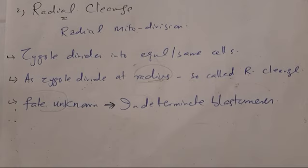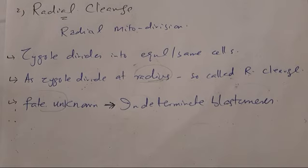This is all about the classification of Eumetazoa — true multicellular animals — on the basis of arrangement of cells in the body wall into diploblastic and triploblastic animals. You have also studied several other very important terms. Thank you.